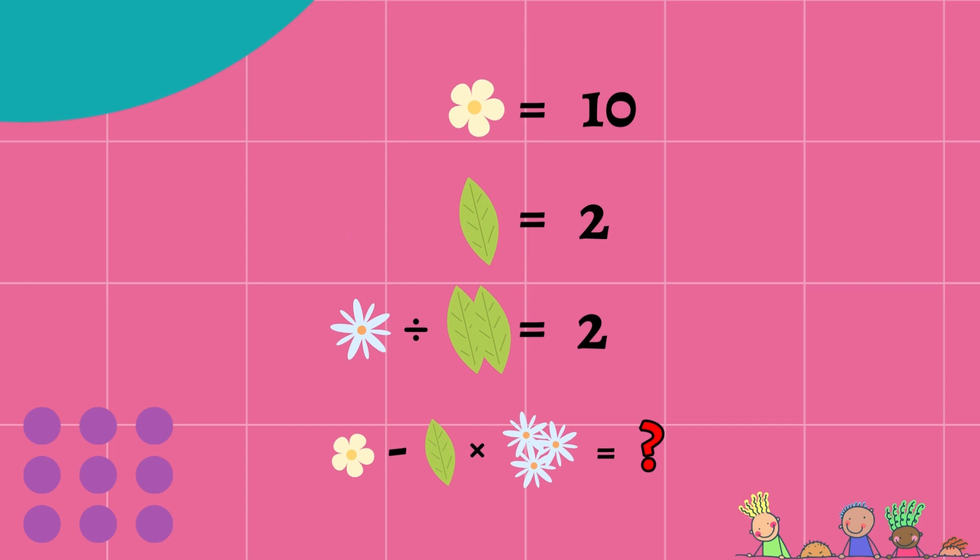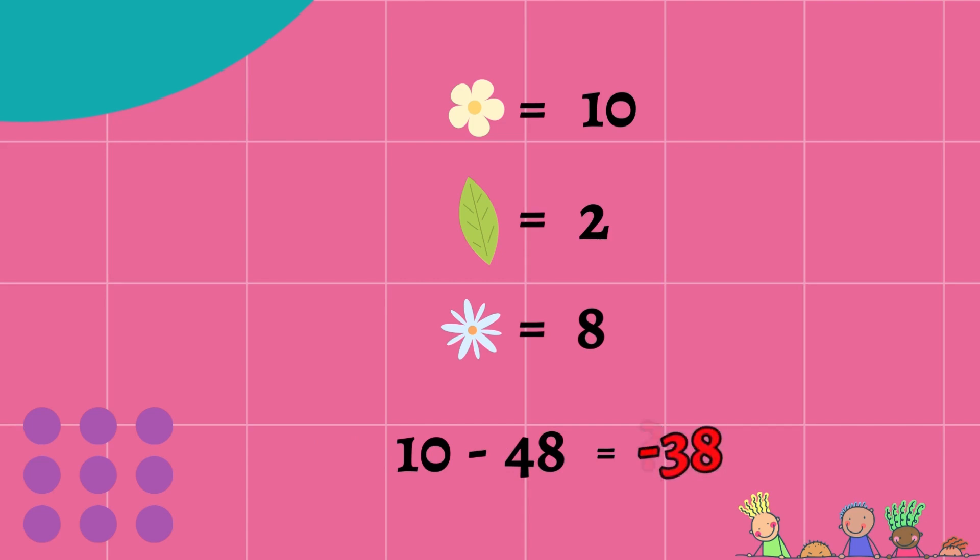Next, we can take the value of the leaf and plug it into the third equation. A daisy divided by two times two equals two. Two times two is four. Multiply both sides by four, we get daisy equals eight. All we have to do now is take all the values and place them in lieu of flowers and leaves in the final equation: ten minus two times three times eight. Remember to do multiplication first. Three daisies are equal to twenty-four. Two times twenty-four is forty-eight. Ten minus forty-eight is equal to negative thirty-eight. So the correct answer to this equation is negative thirty-eight. You'd be surprised how many people got this wrong.